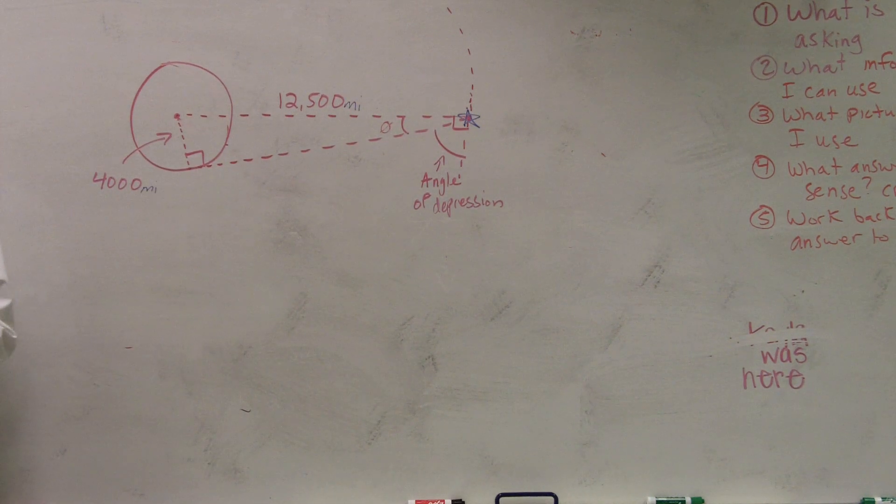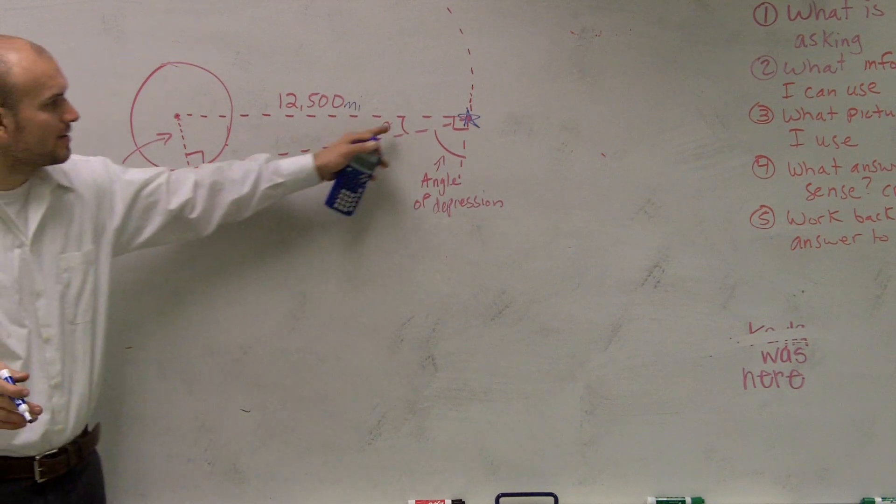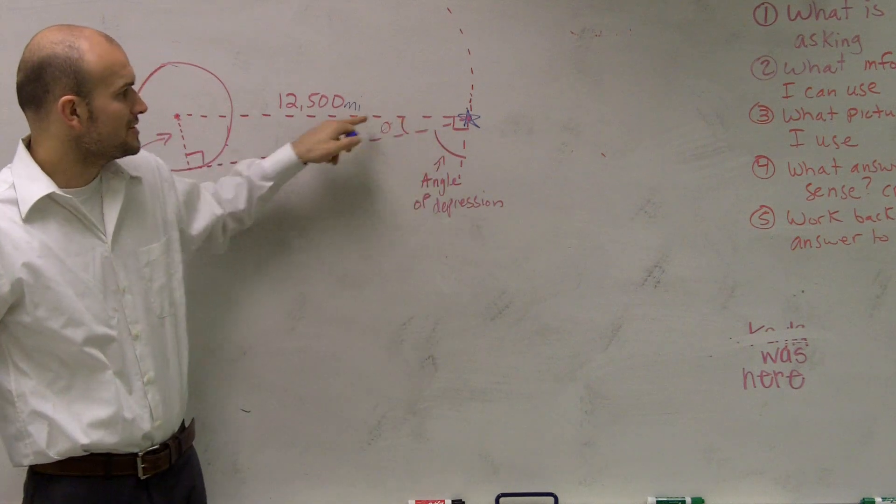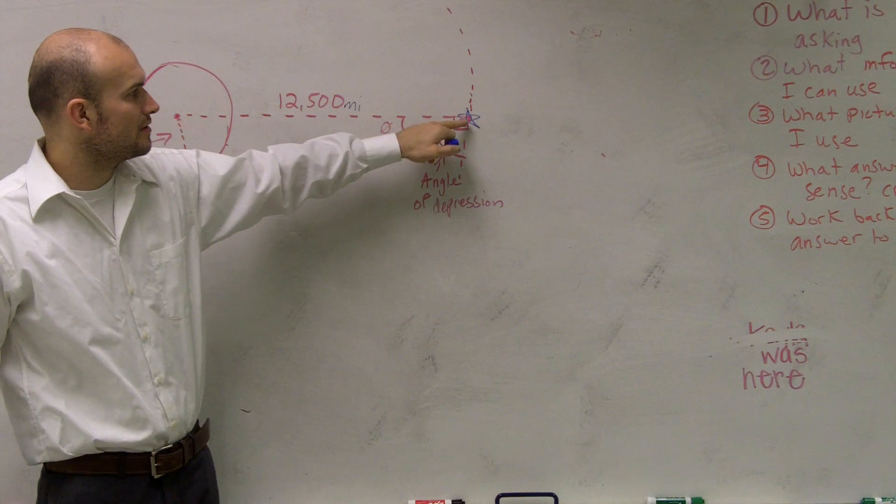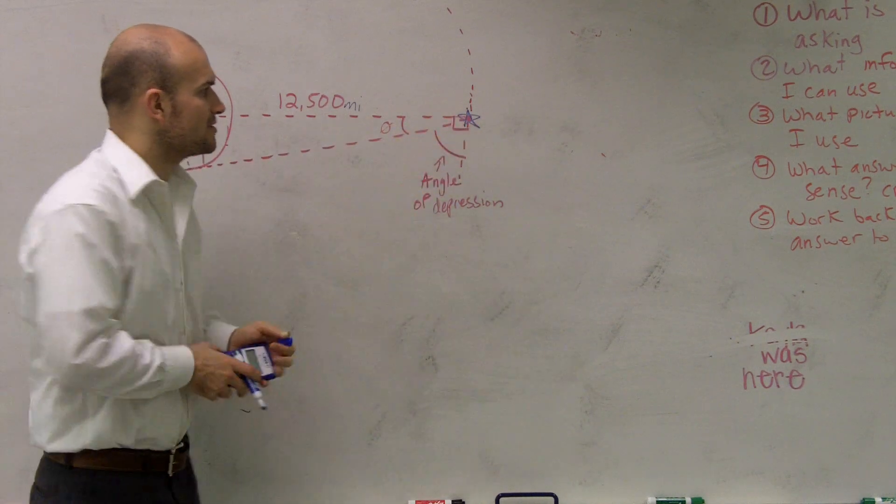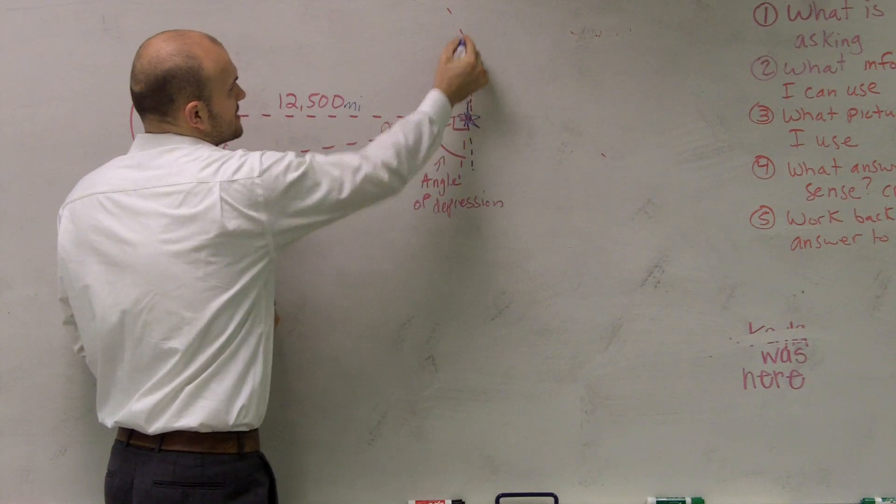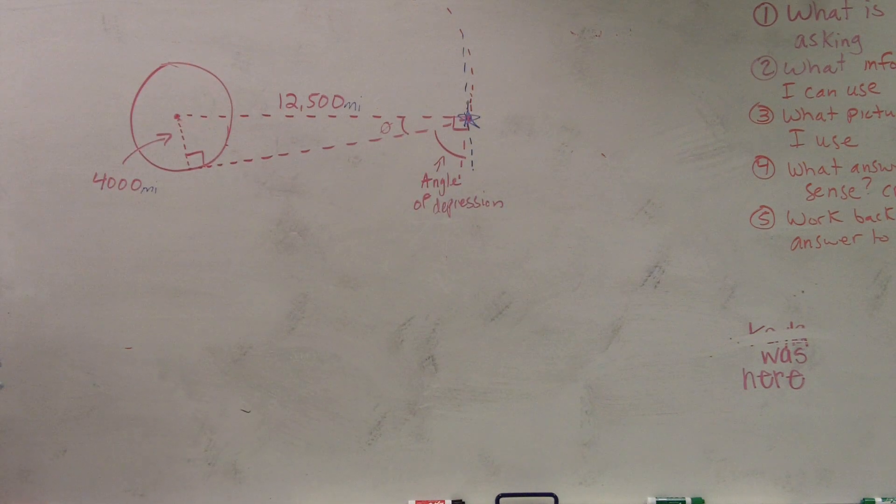So what we're essentially given is a right angle with two points, correct? And then what they want us to do is find this angle of depression, which is going to be not your angle that it makes with the satellite, but the angle that it's going to be giving you on the vertical, on your tangent line to your satellite.